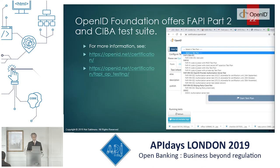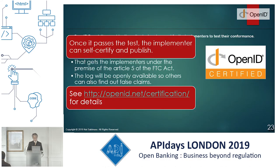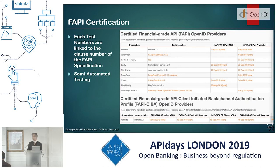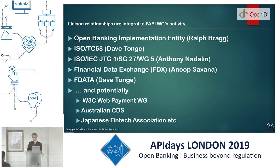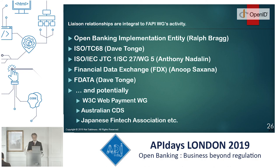The OpenID Foundation offers a FAPI Part 2 conformance test suite. You can go to those links and find out what it is. Once an implementation passes all the tests, implementers can self-certify and publish to get an OpenID certified mark. There are now a bunch of certified product implementations available, and the number is increasing. There are also external liaisons — FData is one of our liaisons, and we work very closely with ISO/IEC and CCPA, which have started on QR code payments as well.